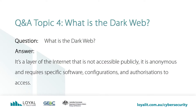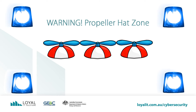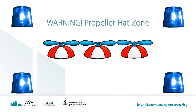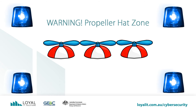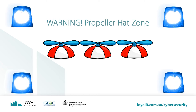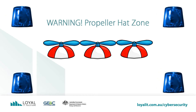I've been asked the question: what is the dark web? Well, the answer is it's a layer of the internet that's not accessible publicly. It is anonymous and requires specific software configurations and authorizations to access. Here's another propeller hat zone. Like the VPN service, we're going to be talking about the technologies behind the dark web and how to access them. This rates a three propeller hats out of five.